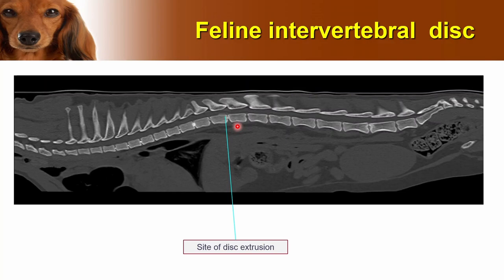Here's a CT of a cat showing different stages of disc disease: a nice calcified disc here, some remnants of calcified material, a blush of calcified material in the actual canal compressing the spinal cord, and then a very old chronic disc with sclerosis of the end plate — presumably an old disc extrusion that was managed non-surgically or was clinically silent in that cat.